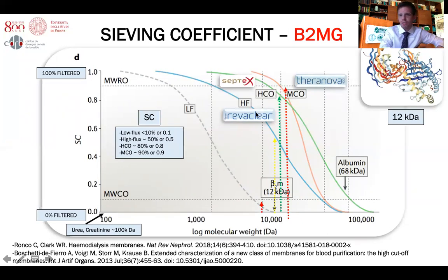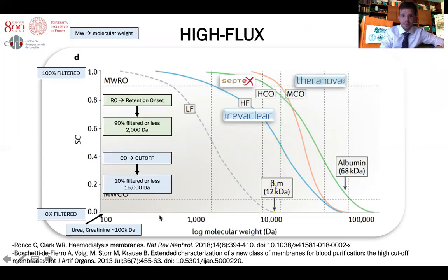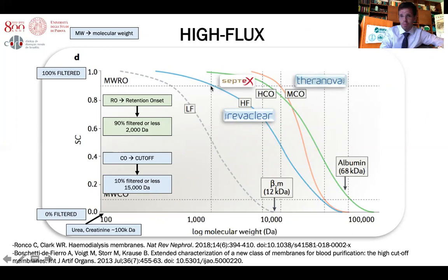In this graph, the x-axis shows molecular weight and the y-axis shows the sieving coefficient. Each curve represents a different membrane. For beta-2 microglobulin, the sieving coefficient using a low flux membrane is less than 10%, using a high flux membrane it is 50%, using a high cutoff membrane it is 80%, and using a median cutoff membrane it is 90%. Using a high flux membrane, the retention onset is 2,000 daltons and the cutoff is 15,000 daltons.